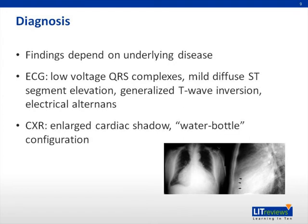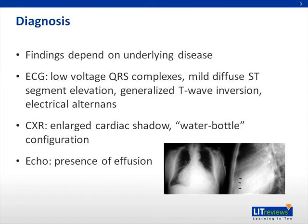A relatively large effusion might cause an enlarged cardiac shadow with a so-called water bottle configuration on chest X-ray, while lung fields are usually clear. Echocardiogram is the most sensitive technique for evaluating the size and progression of effusion, which appears as a clear, echo-free space between the epicardium and pericardium. The presence of both anterior and posterior effusion generally indicates a large collection. Flattening of septal motion and collapse of the right ventricular outflow tract during diastole are signs of tamponade.